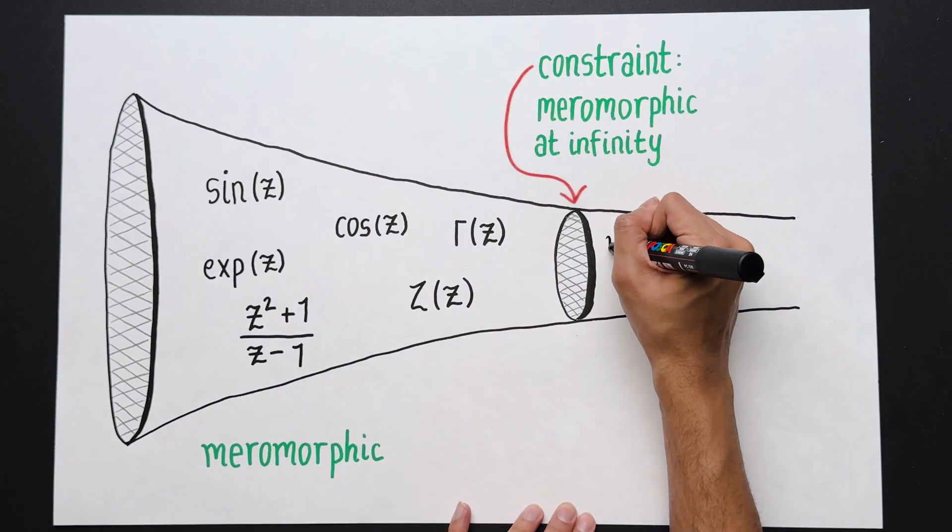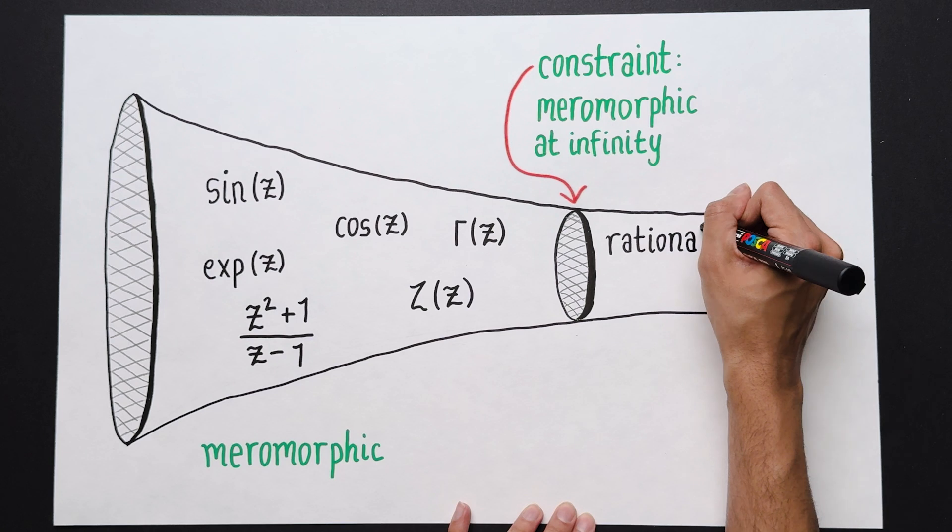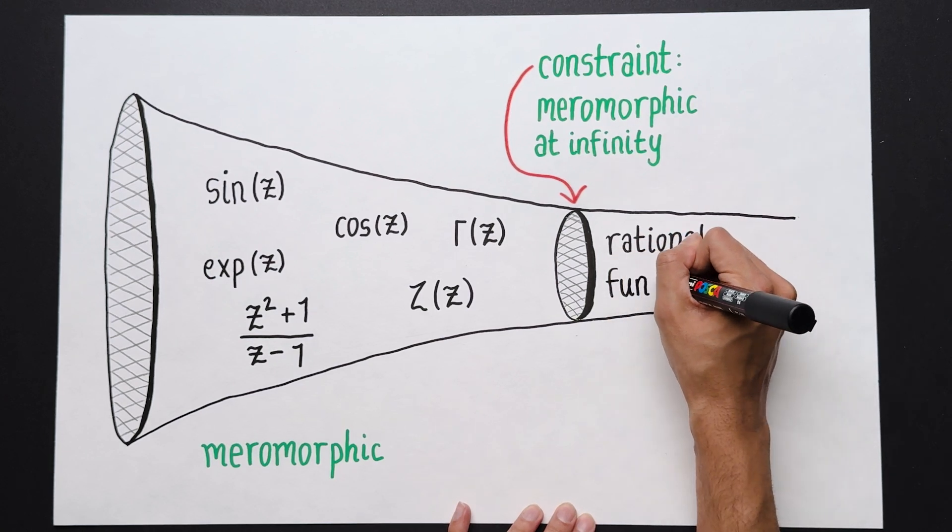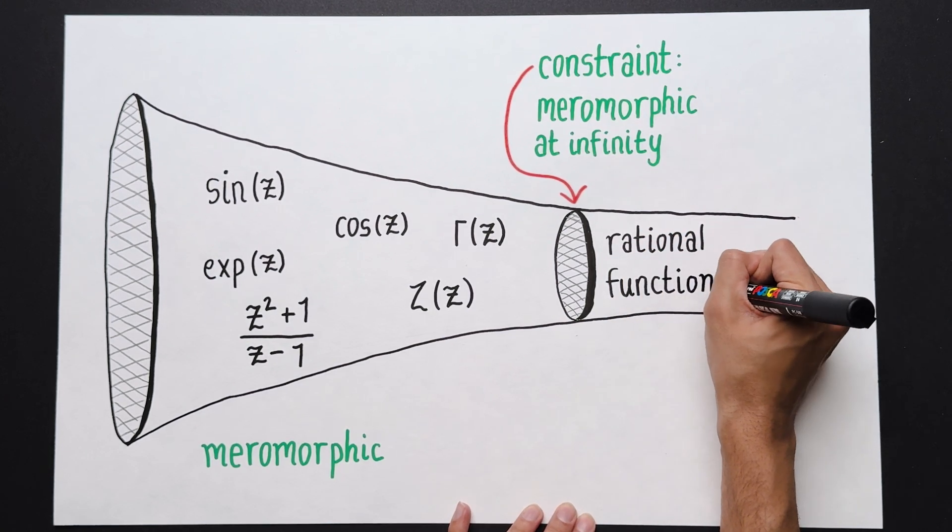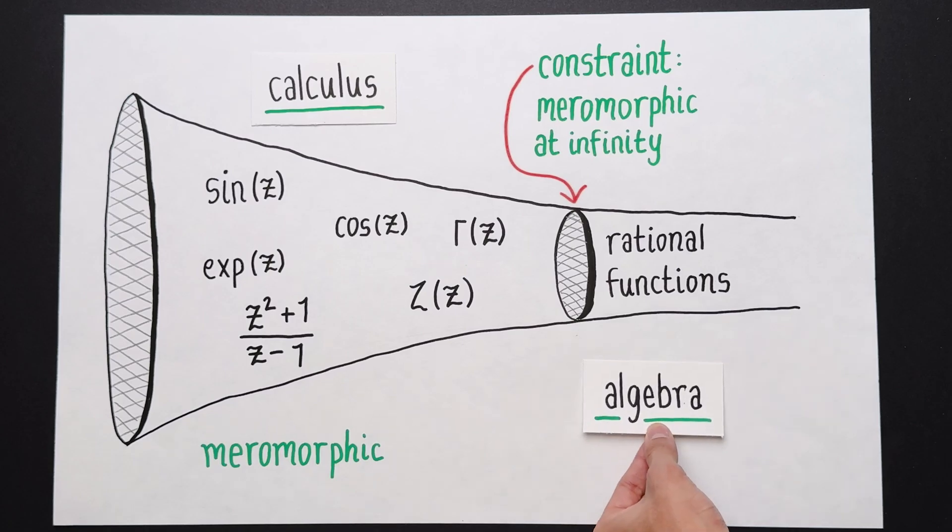The first big theorem of this area is that every meromorphic function that's also meromorphic at infinity must be a rational function, i.e. a ratio of two polynomials. This is really quite profound. A function being meromorphic is a condition from calculus, whereas a function being rational is a condition from algebra.